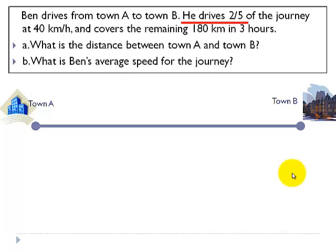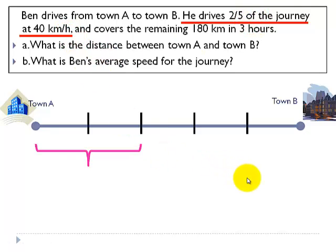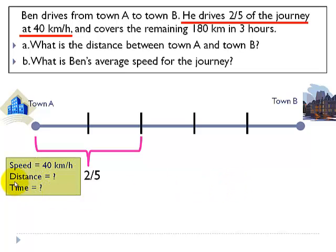He drives two fifths of the journey at 40 km per hour. For this, what we do is divide the entire journey into five parts and he drives two out of five parts of the journey at 40 km per hour. The details that we know from the question so far: speed is 40 km per hour, distance not known, and time not known either.